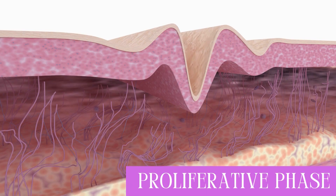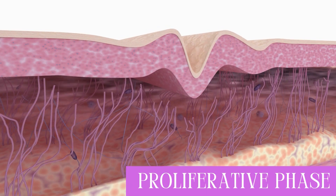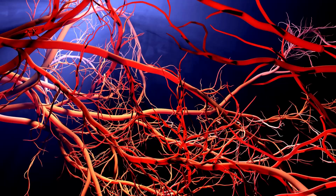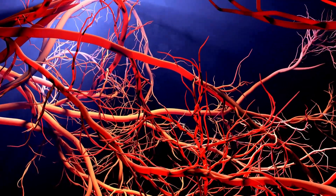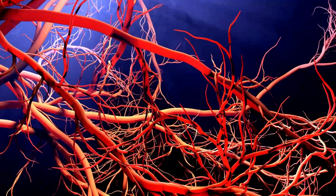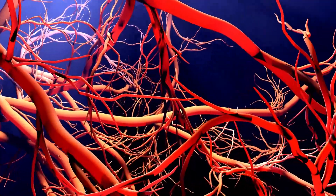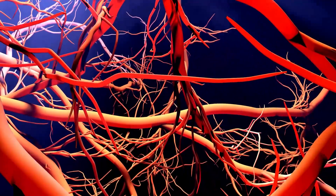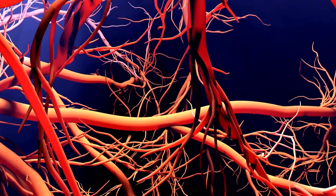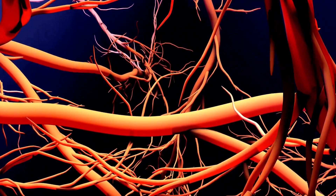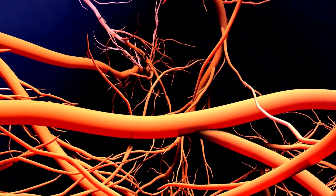Two or three days later, the proliferation and migratory phase begins. In the initial portion of this phase, the clot exterior dries, forming a scab. Fibroblasts infiltrate the wound and secrete collagen to strengthen the clot.